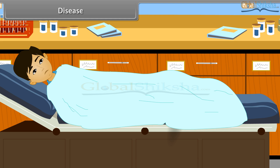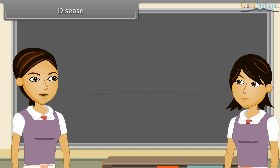Do you know that when we are unhealthy, then we are having one or more diseases? Disease — what is that? I have read that disease means disturbed ease. Yes, scientifically, disease can be defined as a disordered or incorrectly functioning organ, part, structure or system of the body resulting from the effect of genetic or developmental errors, infection, poisons, nutritional deficiency or imbalance, toxicity, or unfavorable environmental factors — illness, sickness, ailment.